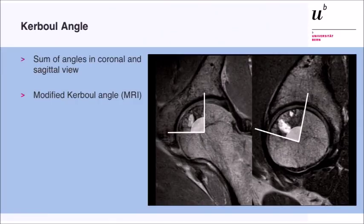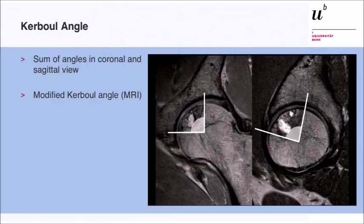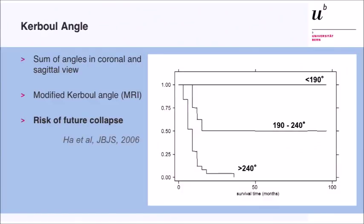One method to quantify the size of the lesion is the Kerbel angle, first described on conventional images, and now there's also the modified Kerbel angle for MRI. It's measured on the mid-sagittal and mid-coronal plane and the angles are added up. It could be shown that this combined angle is prognostic for the risk of future collapse.